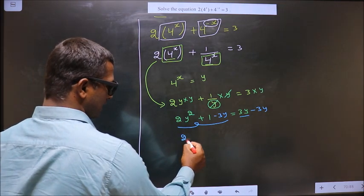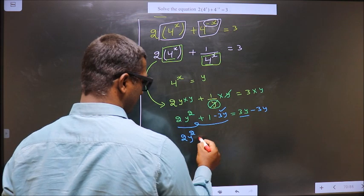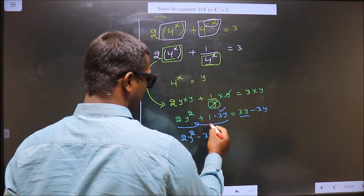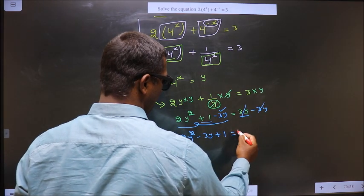Now this you write in proper quadratic form: 2y^2, after that you should write the y term, minus 3y, finally the constant, plus 1, equal to 0.